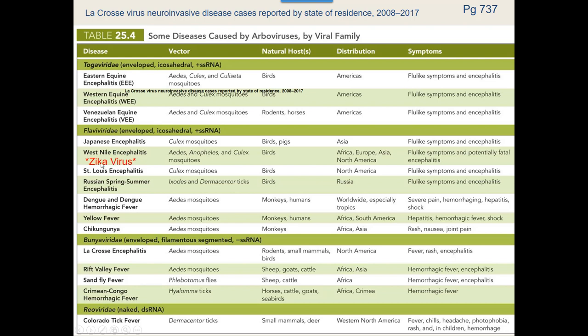One particular virus that stands out on this map is La Crosse encephalitis — which is actually in the Bunyaviridae group, not the Togaviridae or Flaviviridae, and we'll get to that in lecture. But it is the virus discovered here in La Crosse first, and because it was first discovered here in La Crosse, Wisconsin, it's named the La Crosse encephalitis. However, it is found in other places in North America — it's not found only in La Crosse.